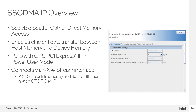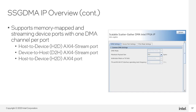When configuring the SSGDMA IP using the parameter editor, you must make sure you also configure the data and clock frequency according to the values chosen for the user logic application interface. On the interface to user logic, the SSGDMA IP can support both AXI 4 memory map and AXI 4 streaming device ports with a single DMA channel. The available device port options are host-to-device AXI 4 stream port, device-to-host AXI 4 stream port, and host-to-device AXI 4 port. This allows you to select the device port that best suits your user logic requirements.